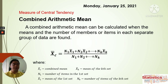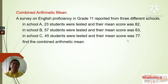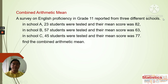Now we have our first example. We have a survey on English proficiency in Grade 11 reported from three different schools: School A, School B, and School C. For School A, there are 23 students tested and the average mean was 82. For School B, there are 57 students with a mean of 63. For School C, there are 45 students with a mean score of 77.